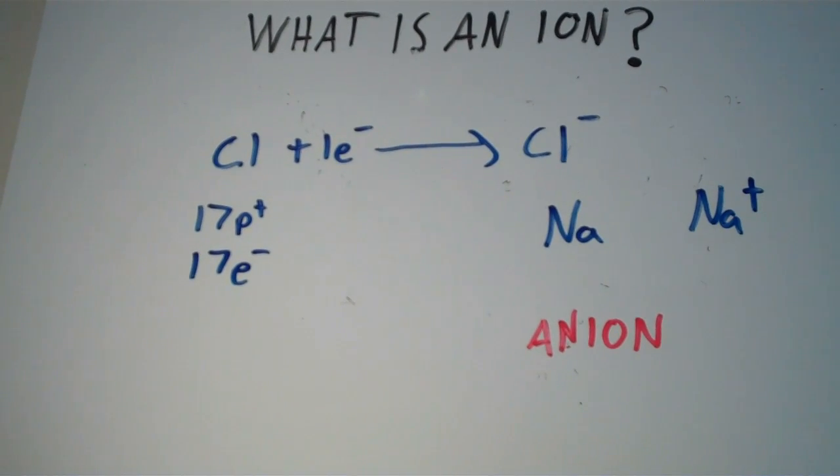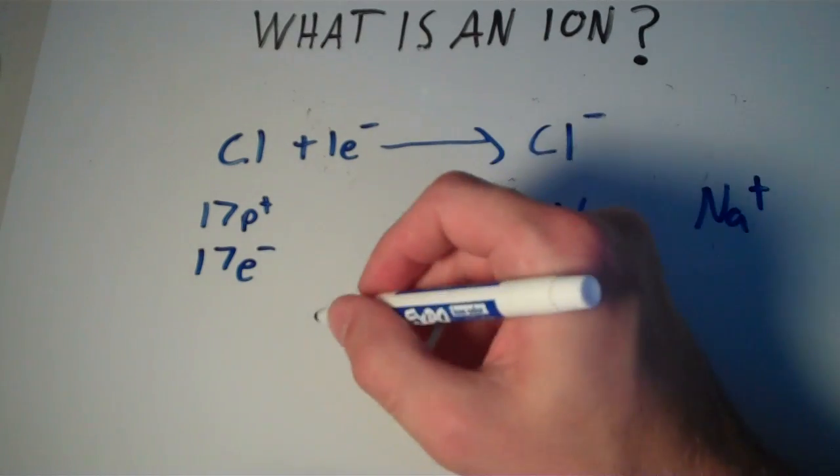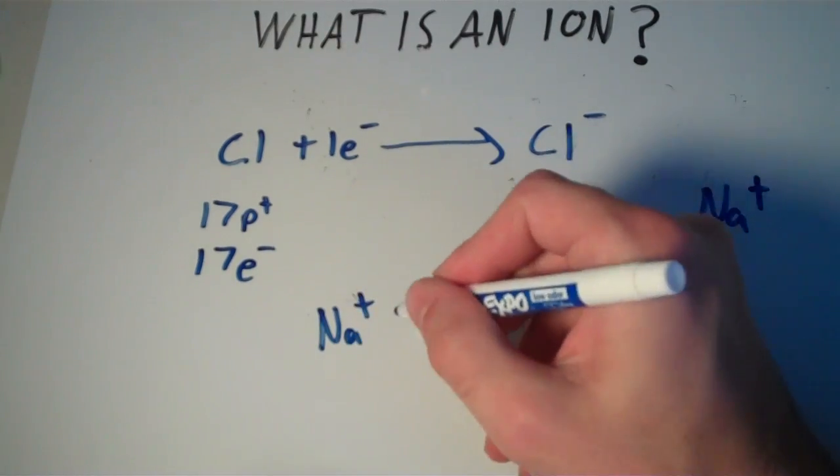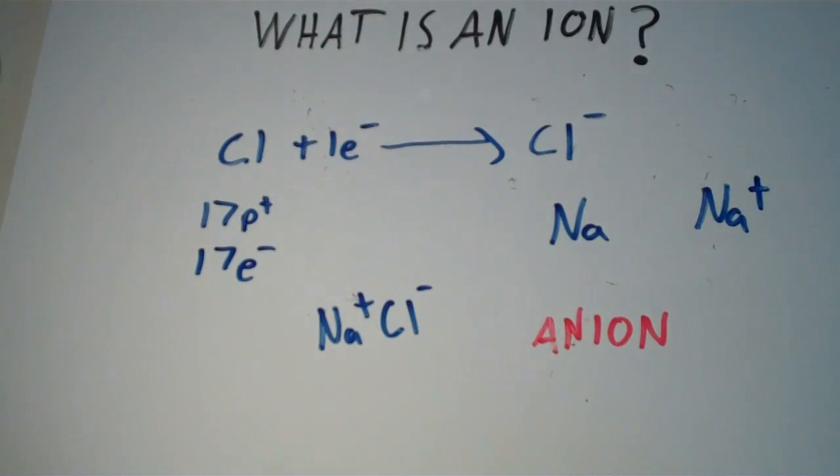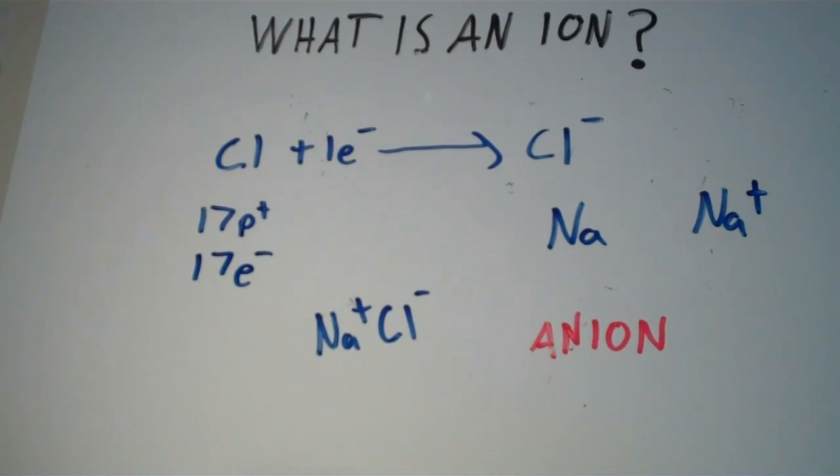And ions are ubiquitous. They're all around us. In fact, we actually eat ions. We eat sodium chloride. These are ions that form what we call table salt that we eat.